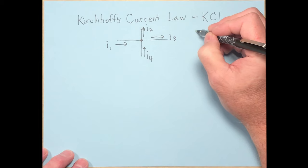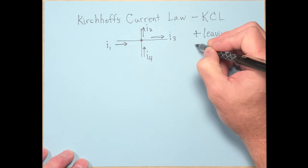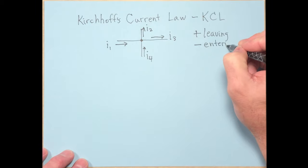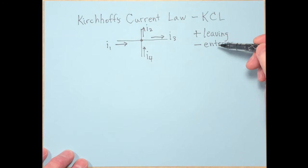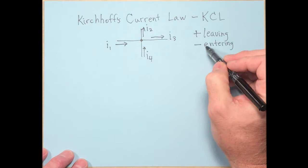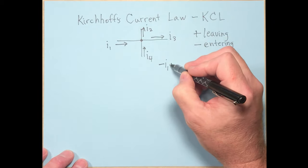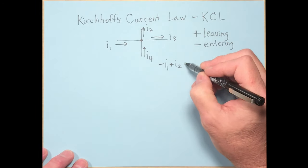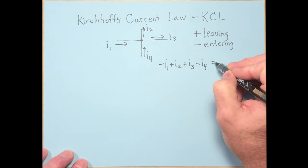The textbook convention calls a positive current one that is leaving a node, and a negative current one that is entering a node. You don't have to follow this sign convention — but once you apply one, stick with it. Applying it here: I1 is entering so it's negative I1; I2 is leaving so it's plus I2; I3 is leaving so it's plus I3; I4 is entering so it's minus I4, and that equals zero.